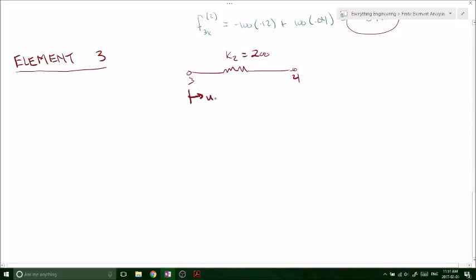And we have our u3 is equal to 0.04. Again, from a previous video, check it out, so you understand where those values came from. And u4 is equal to 0.